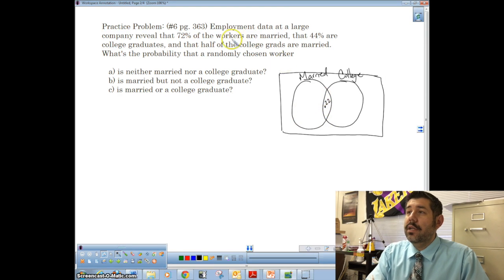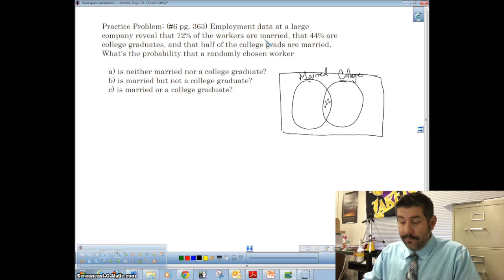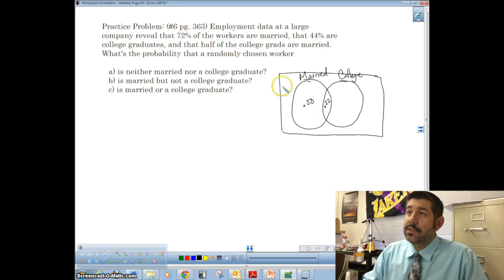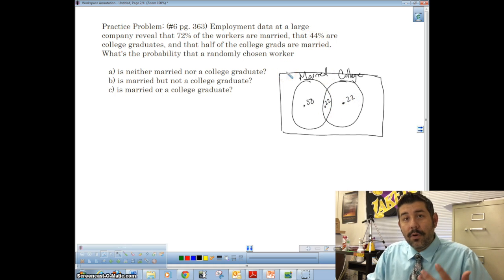So that means that married is going to be, let's see, large company reveals 72% of workers are married. So that means that my notes here, that this would be 50% right here, right? Because we got 50 plus 22, which is 72. And then college would be half of it, right? So we know that this is 0.22 so that both of them add to 0.44. That's it.